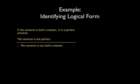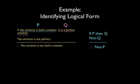If the universe is God's creation, it is a perfect universe. The universe is not perfect, therefore the universe is not God's creation. The logical form of this argument is: if P, then Q; not Q, therefore not P.